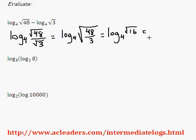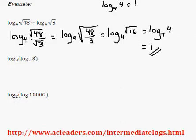So log base 4 of root 16. We have log base 4, root 16 is 4, and log base 4 of 4 is just 1. Why? Because log base 4 of 4 can be simplified into log 4 over log 4, which is just 1.